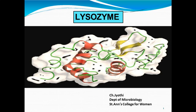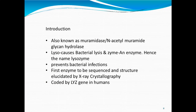Hello, in today's lecture I am going to discuss lysozyme, an antibacterial substance. This topic is included in Unit 1 of Paper 608A, that is Medical Microbiology. Lysozyme is an enzyme also known as muramidase or N-acetyl muramide glycan hydrolase. It is called muramidase because it breaks down murein, that is peptidoglycan of bacterial cell walls. The term lyso means bacterial lysis and zyme refers to enzyme, so lysozyme is an enzyme which brings about bacterial lysis and prevents bacterial infection.